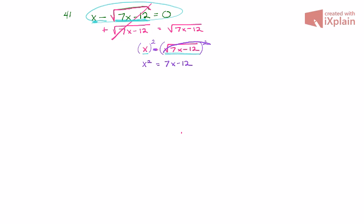At this point, what I want you to notice is that you have an x squared term, you have a 7x term, and a 12 term. Well gee, if I were to subtract 7x from both sides and add 12 to both sides, this provides me with a quadratic.